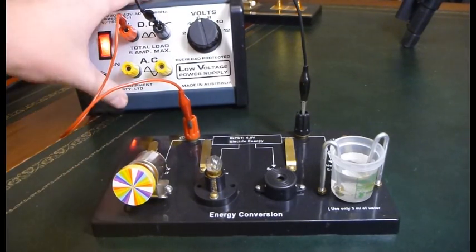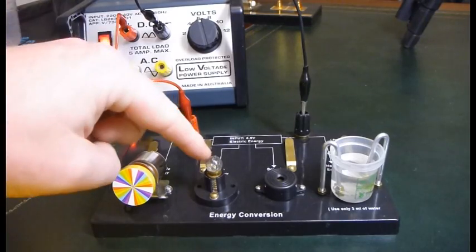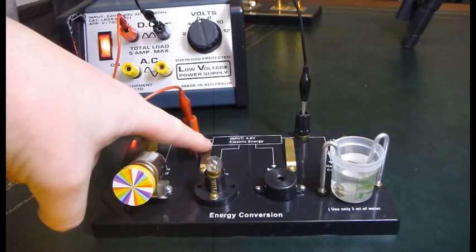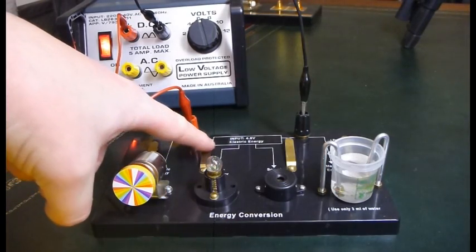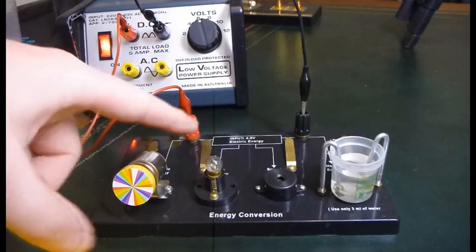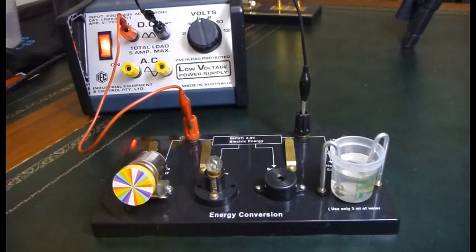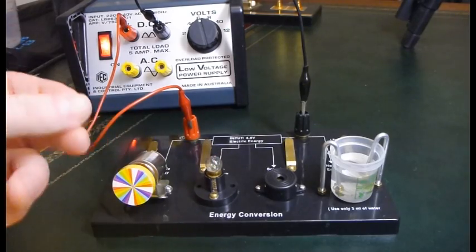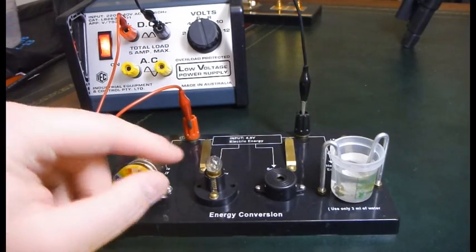Next up we have our electrical energy being converted into light energy. So when I press this button it completes this electric circuit. So light bulbs that give off a lot of heat are actually really inefficient because a lot of that light energy is being wasted as heat. So that's a good sign of whether a light bulb is efficient or not.